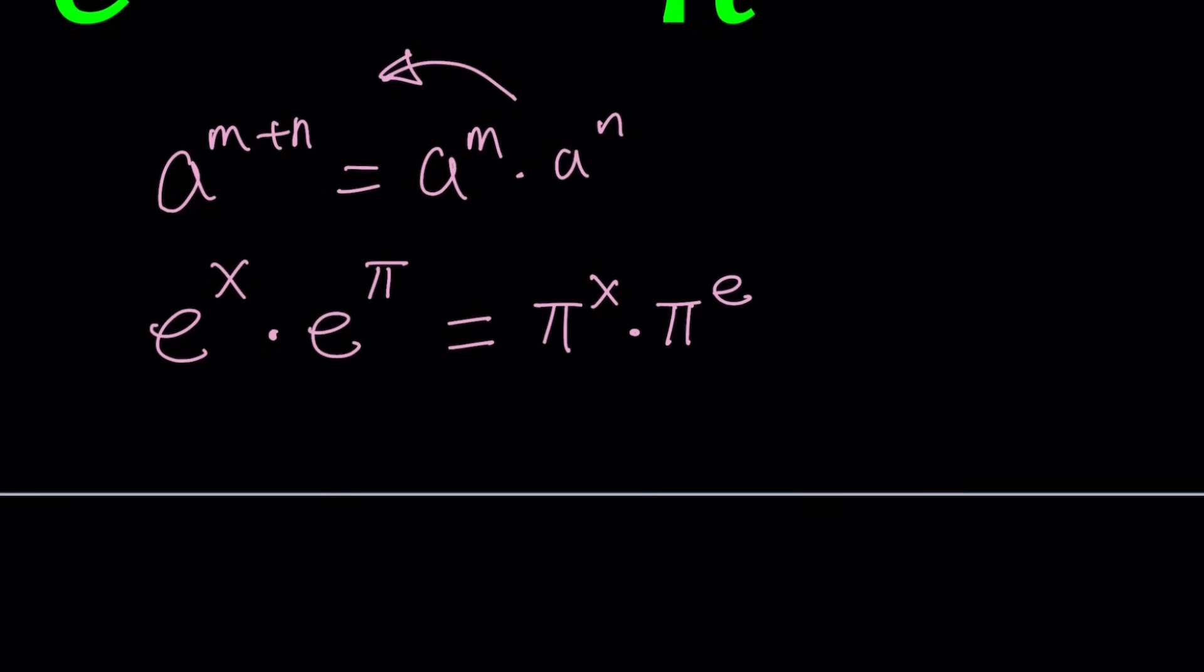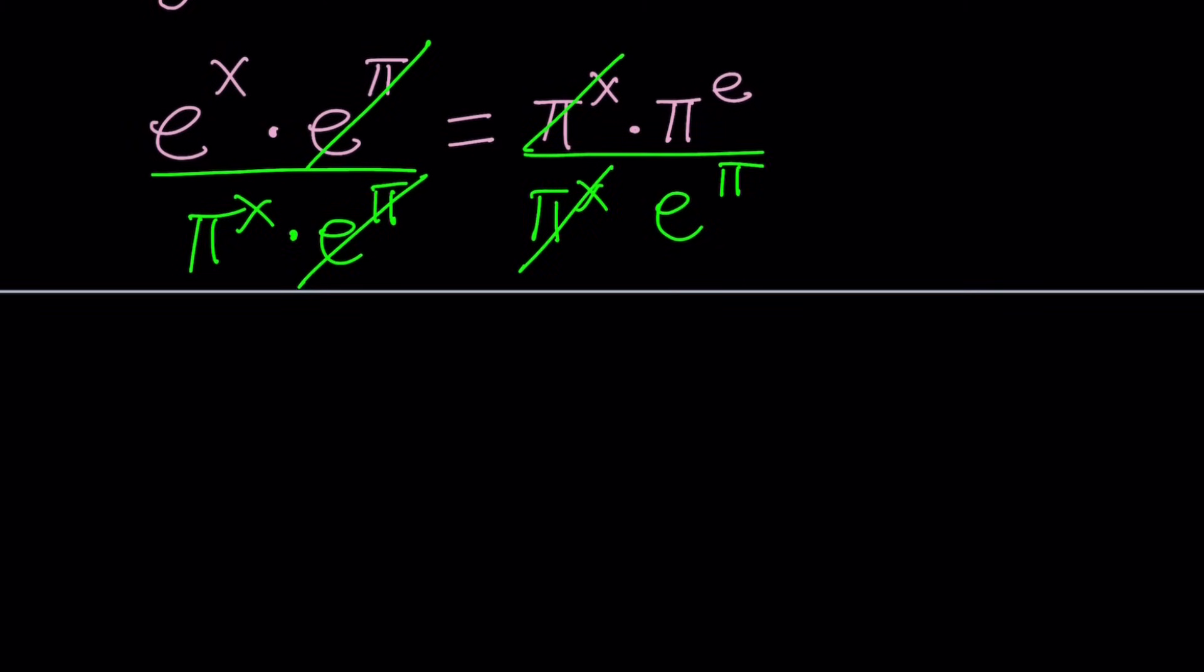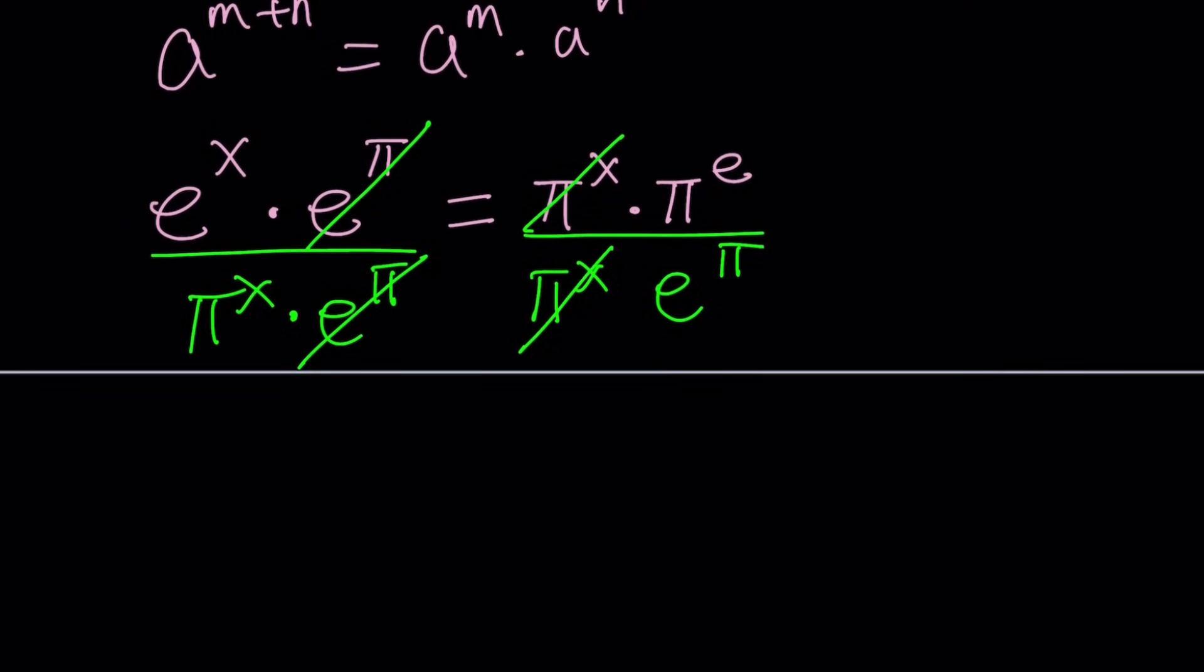So let's go ahead and do this. Put the x's together. I'm going to divide by pi to the x and divide by e to the pi. And notice that we were able to put the x's, I mean when I say x's of course x is the exponent, on the same side. So let's rewrite our expression.